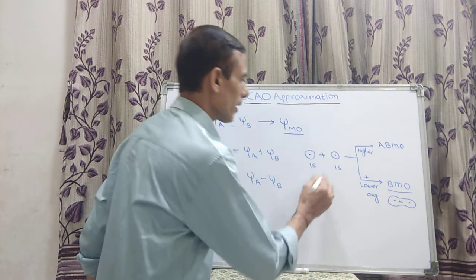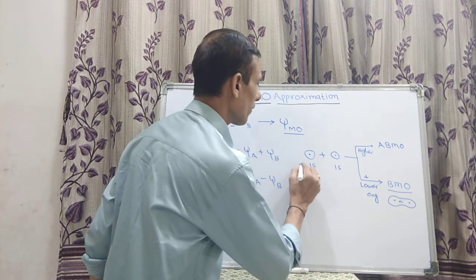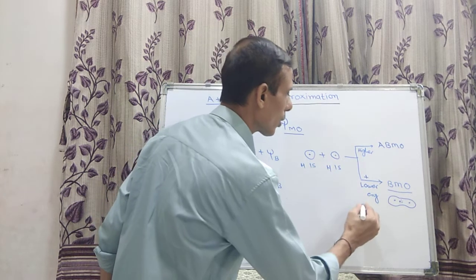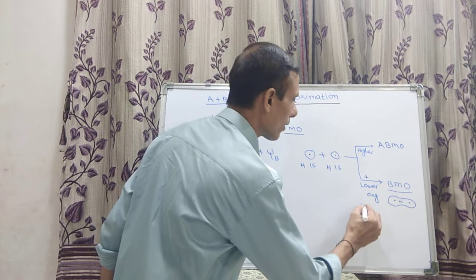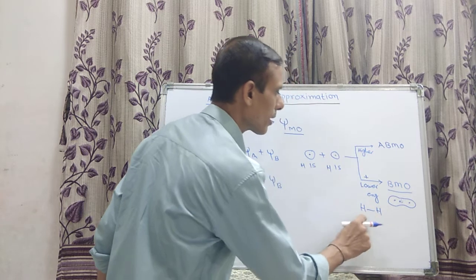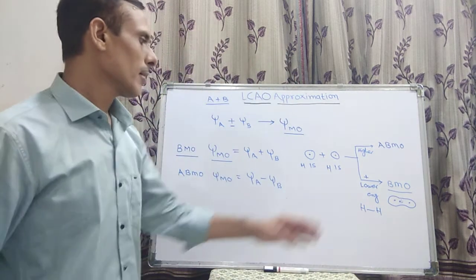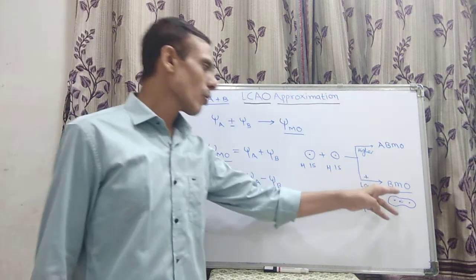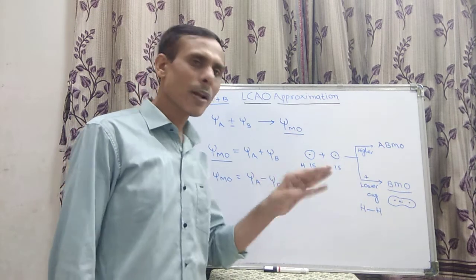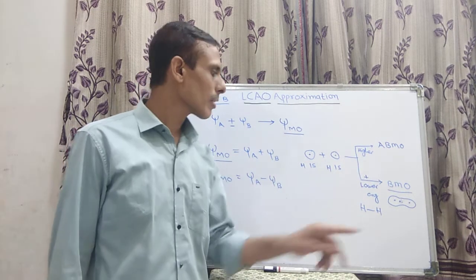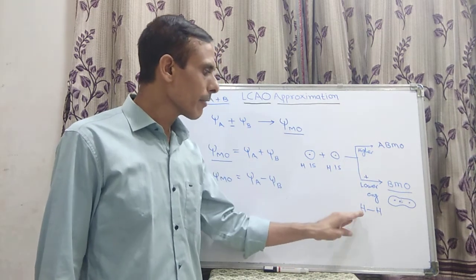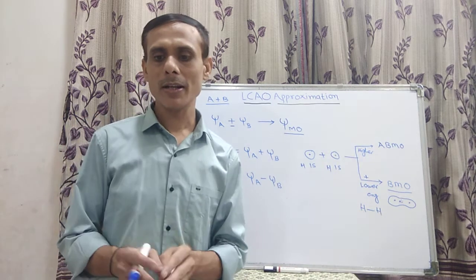Therefore, this bonding molecular orbital provides a favorable situation for the formation of a bond between the two atoms. For example, if it is hydrogen, in this bonding molecular orbital there is a formation of a bond between the two hydrogen atoms. So the bonding molecular orbital provides a favorable situation for the formation of a bond between these two atomic orbitals.